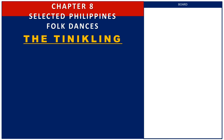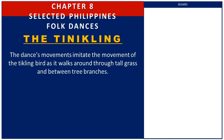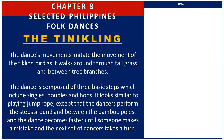Next is the Tinikling, which is considered by many to be the Philippines' national dance. The dance's movements imitate the movements of the Tinikling bird as it walks around through tall grass and between tree branches. People perform the dance using bamboo poles. The dance is composed of three basic steps which include singles, doubles, and hops — similar to jumping rope, except that the dancers perform the steps around and between the bamboo poles. The dance becomes faster until someone makes a mistake and the next set of dancers takes a turn.